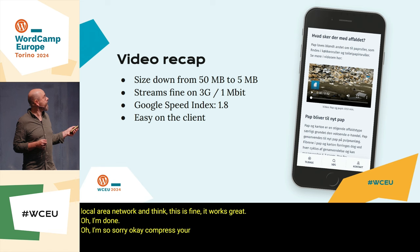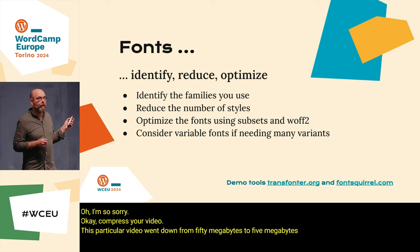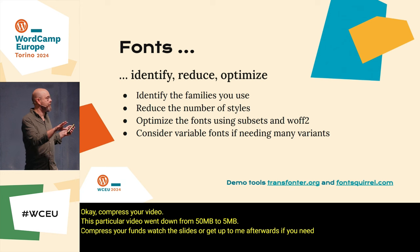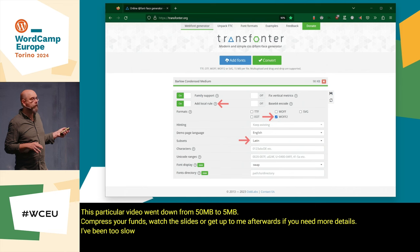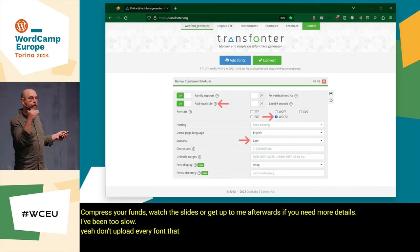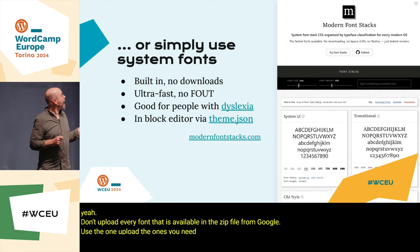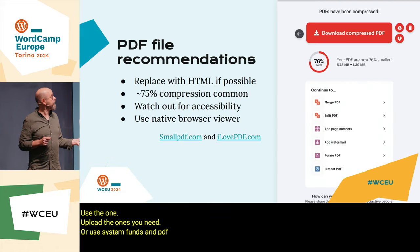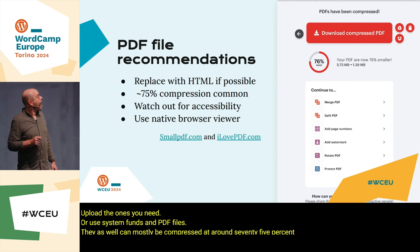Compress your video — this particular video went down from 50 megabytes to 5 megabytes. Compress your fonts: don't upload every font available in the zip file from Google — upload only the ones you need, or use system fonts. And PDF files — they can mostly be compressed around 75% with no visible loss in quality.